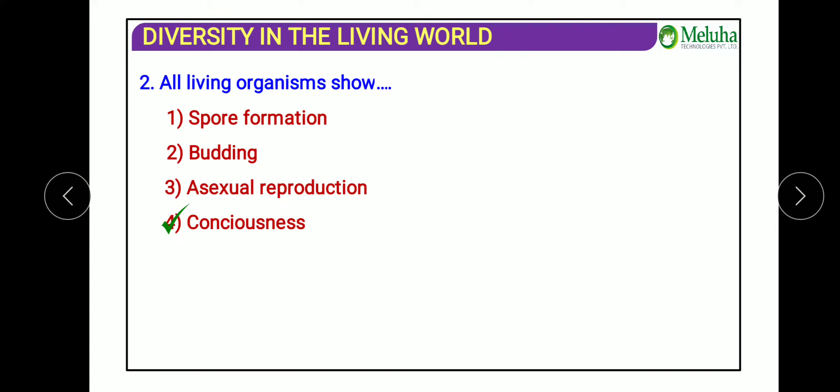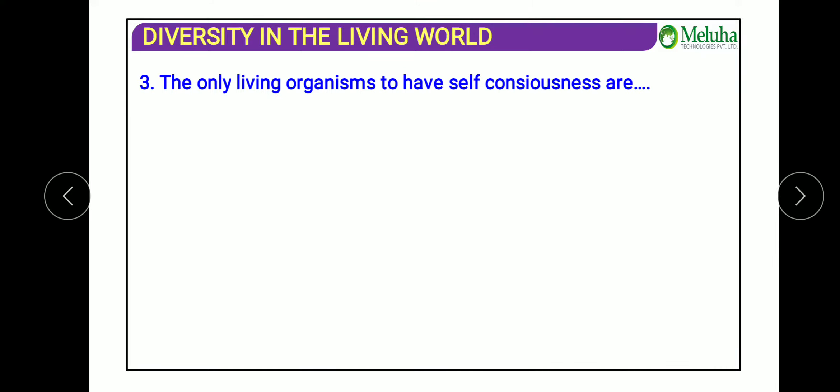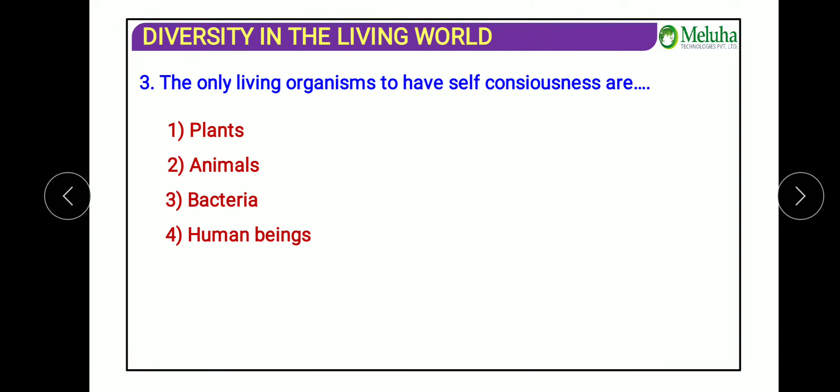The third question asks: which is the only living organism to have self-consciousness with a well-developed nervous system? Among plants, animals, bacteria, and humans, only human beings have self-consciousness — the ability to analyze danger and be aware of themselves. So the answer is human beings.